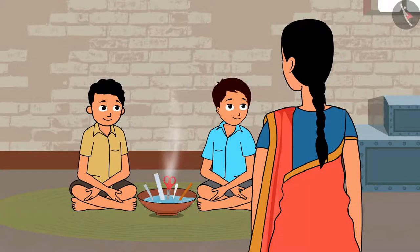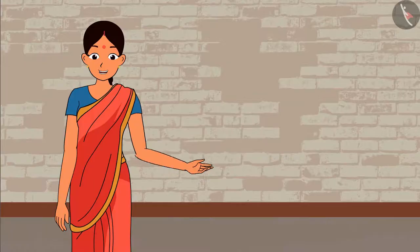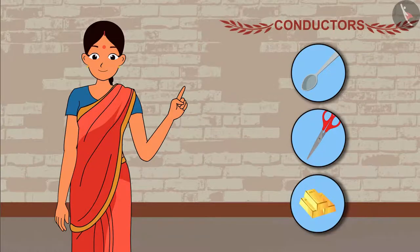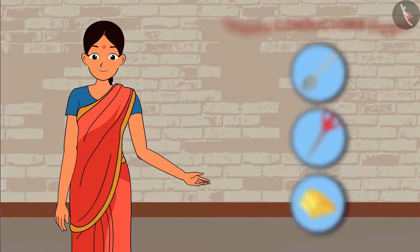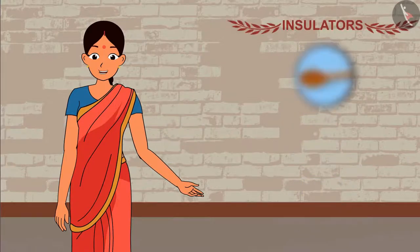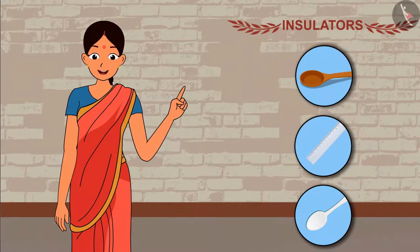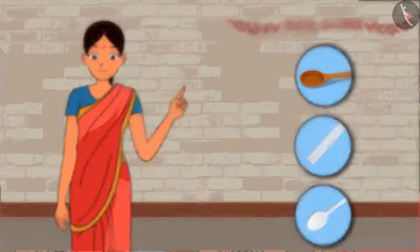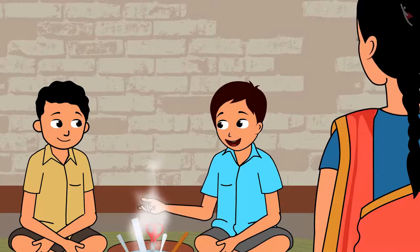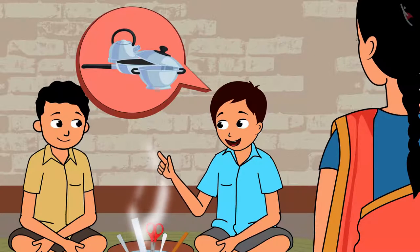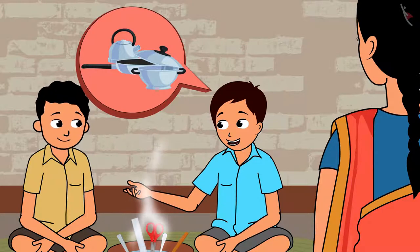Good observation, children. The materials which let heat pass through them are good conductors of heat and are known as conductors. The objects which do not allow transfer of heat are poor conductors of heat and are known as insulators. Oh, that is the reason a few utensils have plastic handles — because if the utensil contains something hot, the heat does not transfer to the handle and we do not burn our fingers.